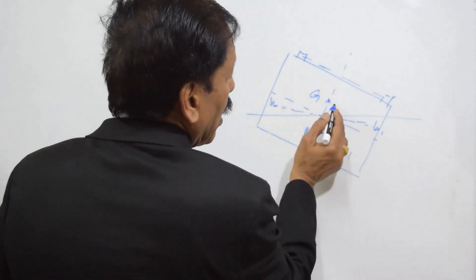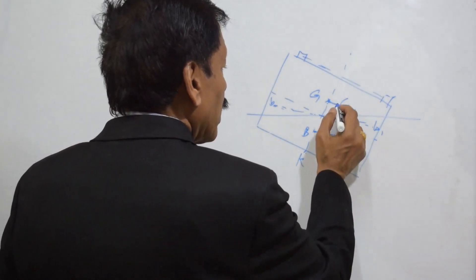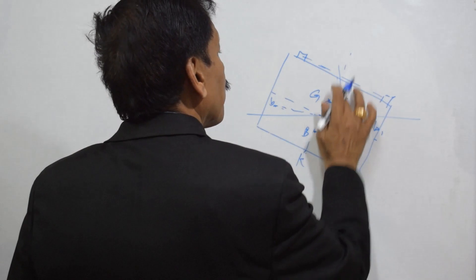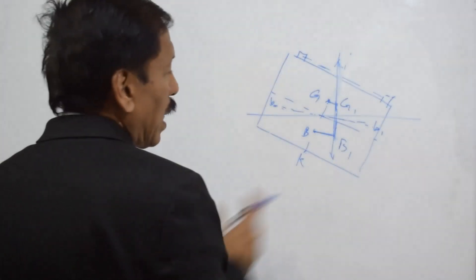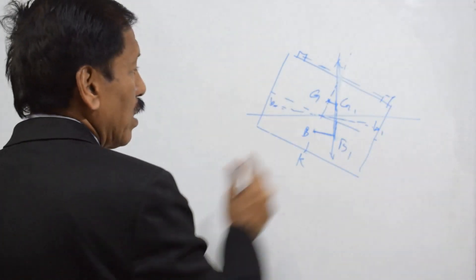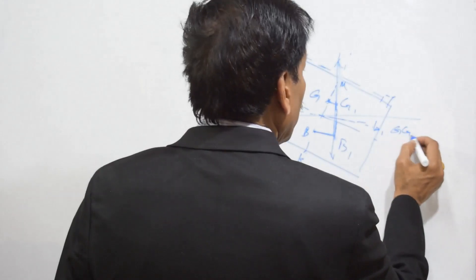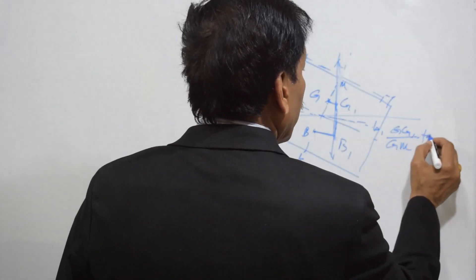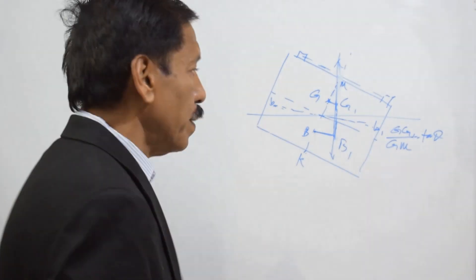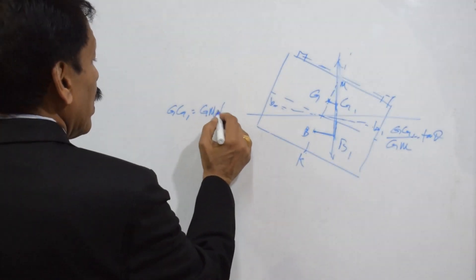When a weight is shifted sideways, the center of gravity also shifts parallel and proportional to the weight, coming to G1. What is important is that in the final equilibrium condition of list, G1 and B1 are vertically above each other — a condition of equilibrium. We can look at this triangle, and for small angles this point can be considered as the metacenter. We have the relationship: GG1 divided by GM equals tan theta.